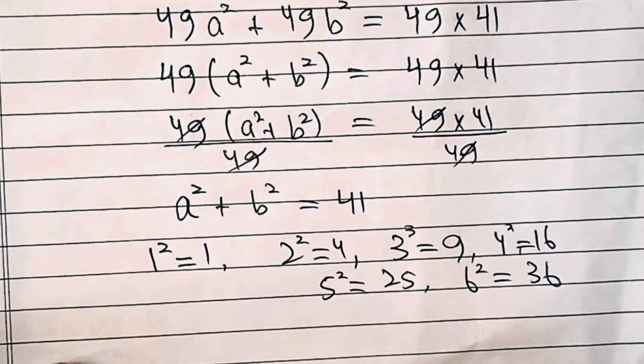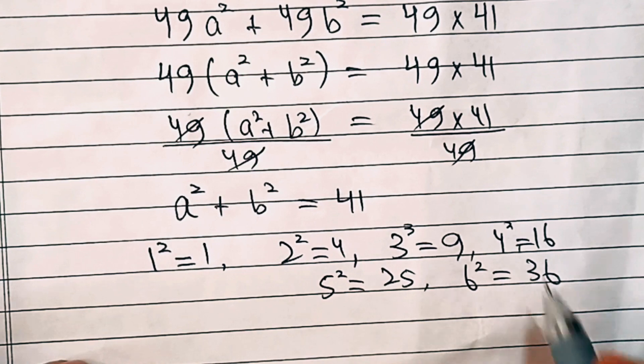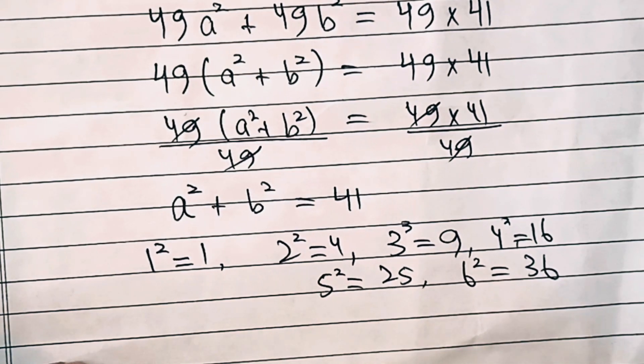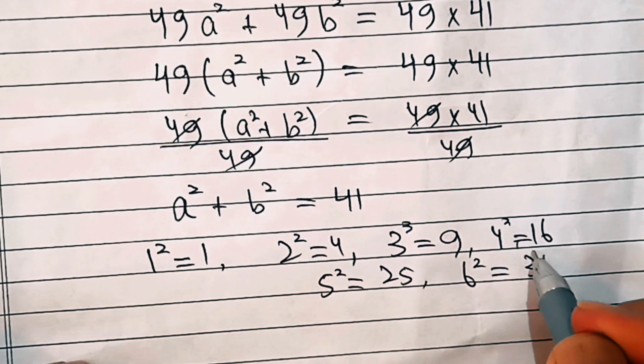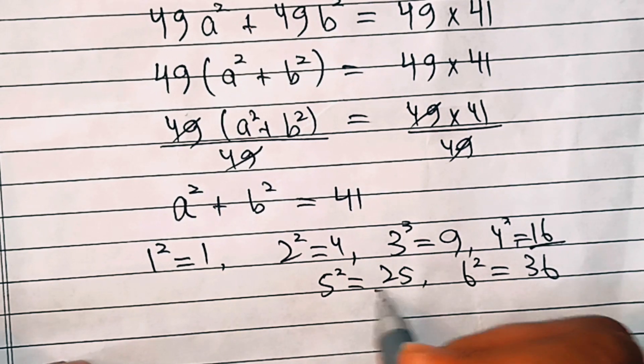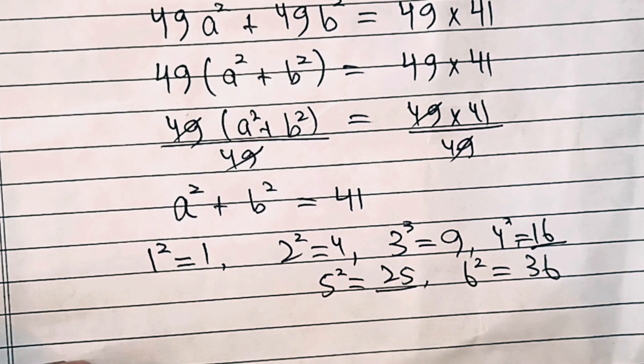Now we have to find two numbers whose sum is 41, and if we see 16 plus 25, if we sum these two numbers we'll get 41.